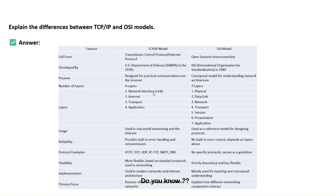Explain the difference between TCP/IP and the OSI model. TCP/IP stands for Transmission Control Protocol, and OSI stands for Open System Interconnection. TCP/IP was created by the US Department of Defense, while OSI was created by ISO. TCP/IP has four layers: Network Interface, Internet, Transport, and Application. OSI has seven layers: Physical, Data Link, Network, Transport, Session, Presentation, and Application.